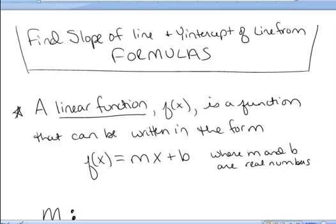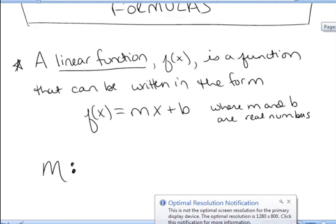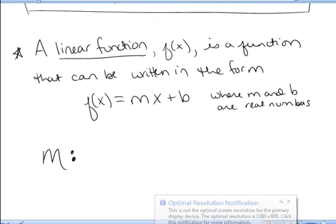In this video we're going to learn how to find the slope of a line and the y-intercept of a line when we're given the formula. A linear function f of x is a function that can be written in the form f of x equals mx plus b, where m and b are real numbers.